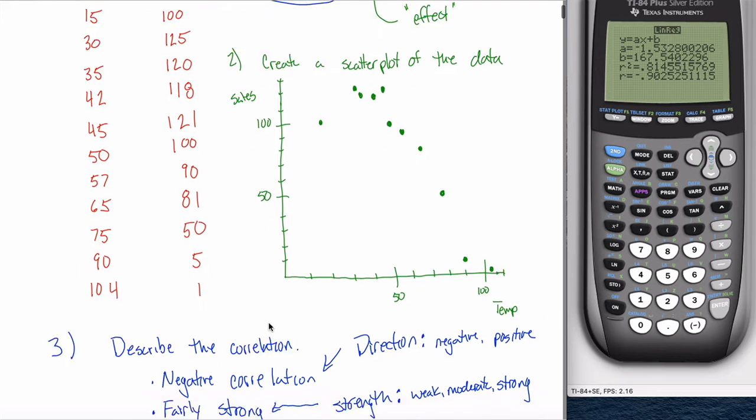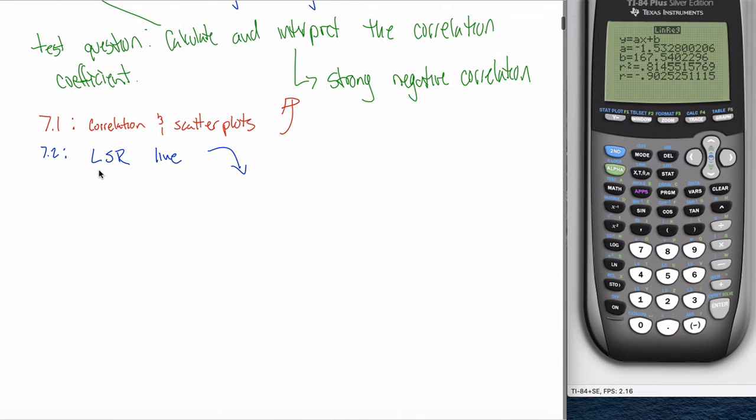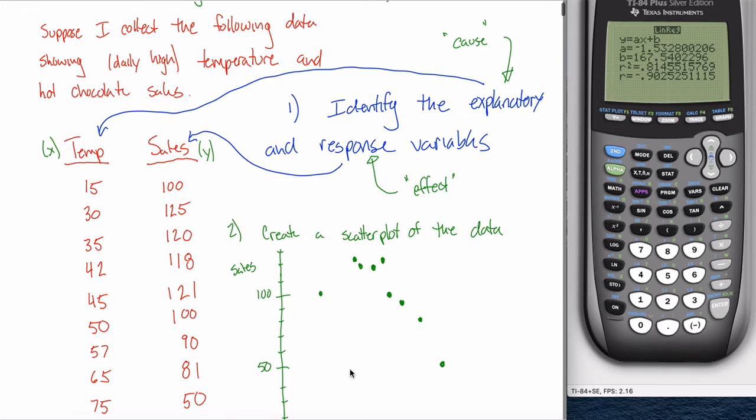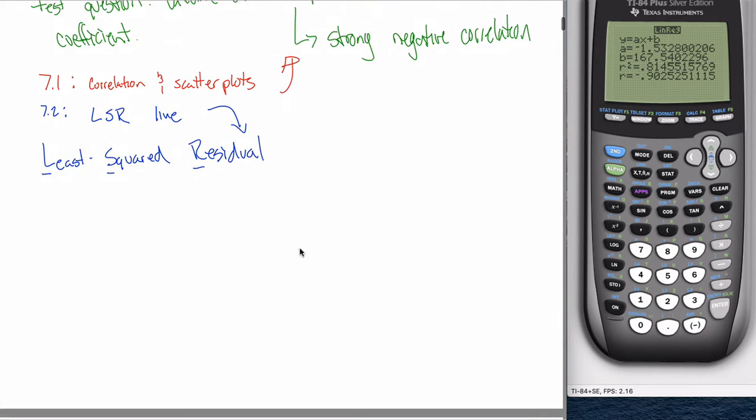That'll be really useful to have the line that best fits the data because you can't really make predictions with a bunch of dots here. But if I had a line, I could use that line to do a lot of things like make predictions. So what we do in 7.2 in our book is we calculate this thing called the LSR line. And LSR stands for least squared residual line. When we say that a line best fits the data, the criteria we're using to define best is this least squared residual idea. But because we haven't defined what a residual is just yet, I can't explain it any better than that for now.